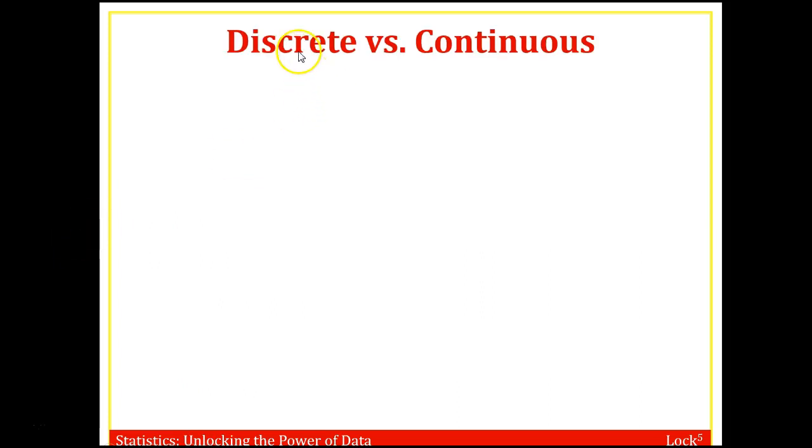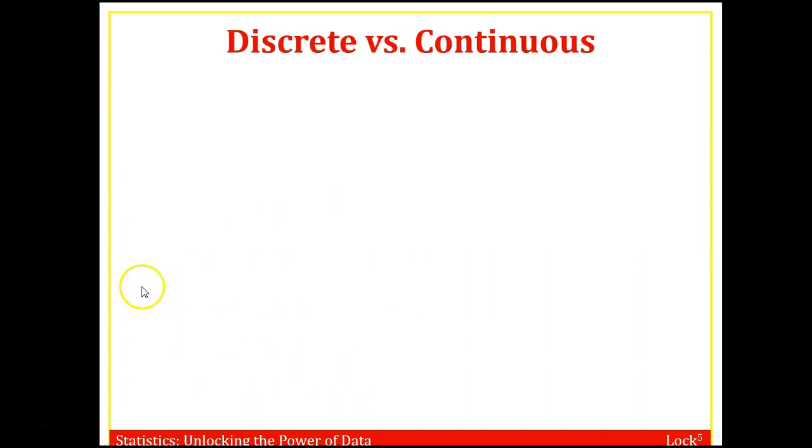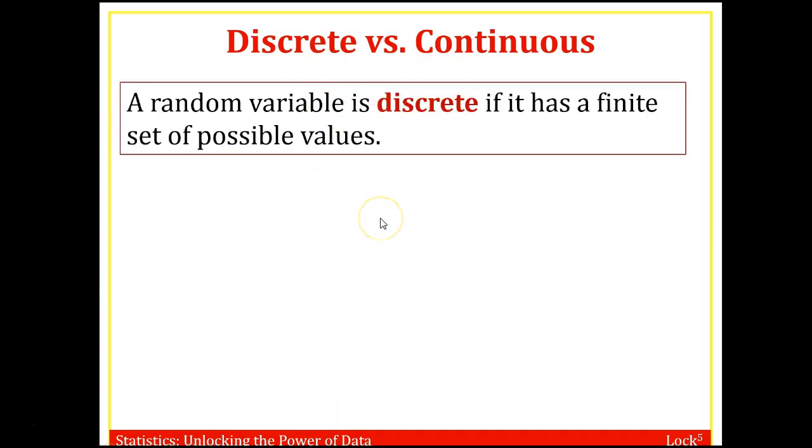Okay, so when we have a variable, one way to think about a quantitative variable, a number, a variable that measures something in terms of a number. So these are all numbers. We'll talk about discrete versus continuous, and a random variable is discrete if it has a finite set of possible values. And I think there's maybe a different way to think about this we'll talk about in a second.